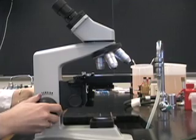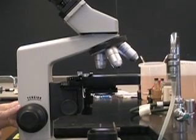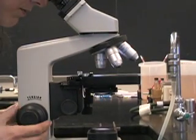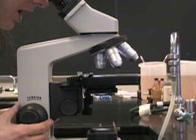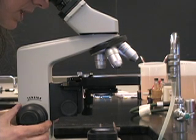Raise the stage of the scope up as far as possible using your course adjustment knob. Look through the ocular lenses and turn the course adjustment knob until the dye you see is clear.